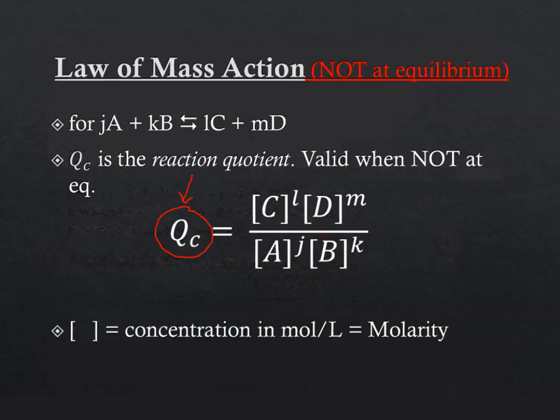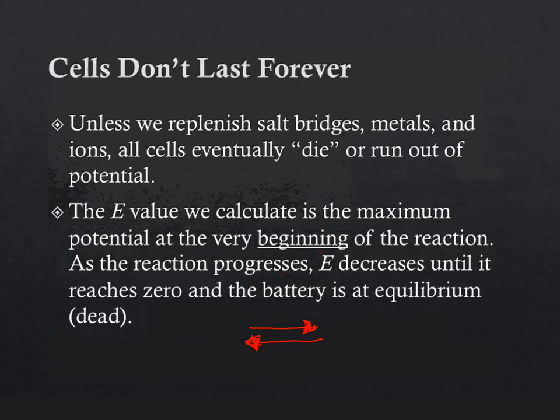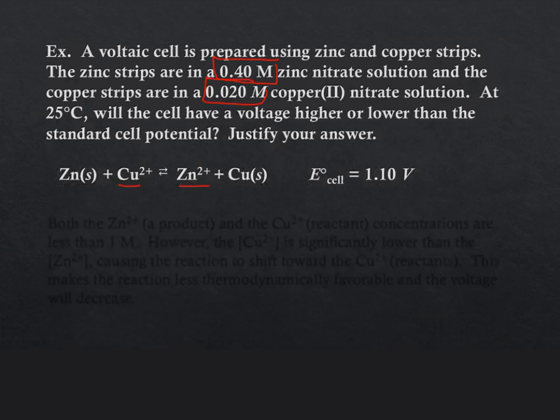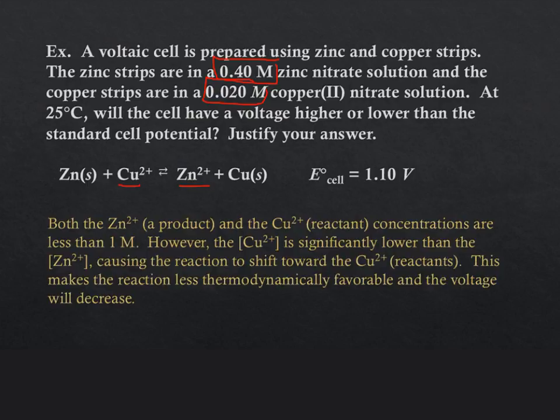And therefore, since this Q value is large, our natural log of it is larger, and the subtraction should give us a value that will deplete our cell potential. But let's check. See, I'm not crazy here. So, here's the question.